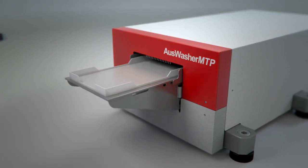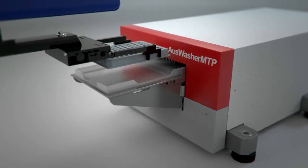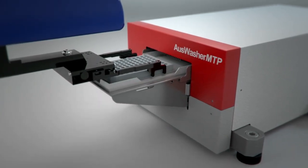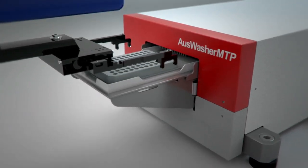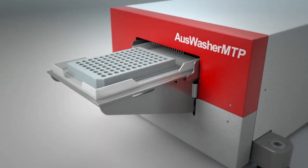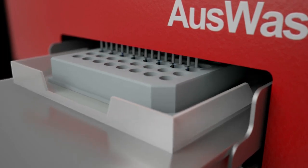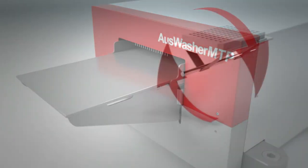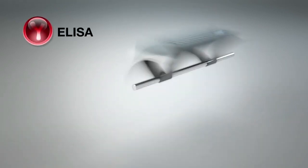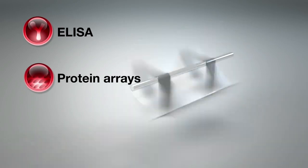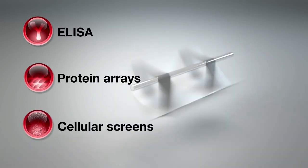Oz Washer is the first instrument to use centrifugation instead of aspiration to remove liquids from plates. Unlike conventional centrifuges, the Oz Washer features a horizontal axis. Whether you are running standard ELISA, multiplex protein arrays, or high-throughput cellular screens, Oz Washer brings unique benefits.